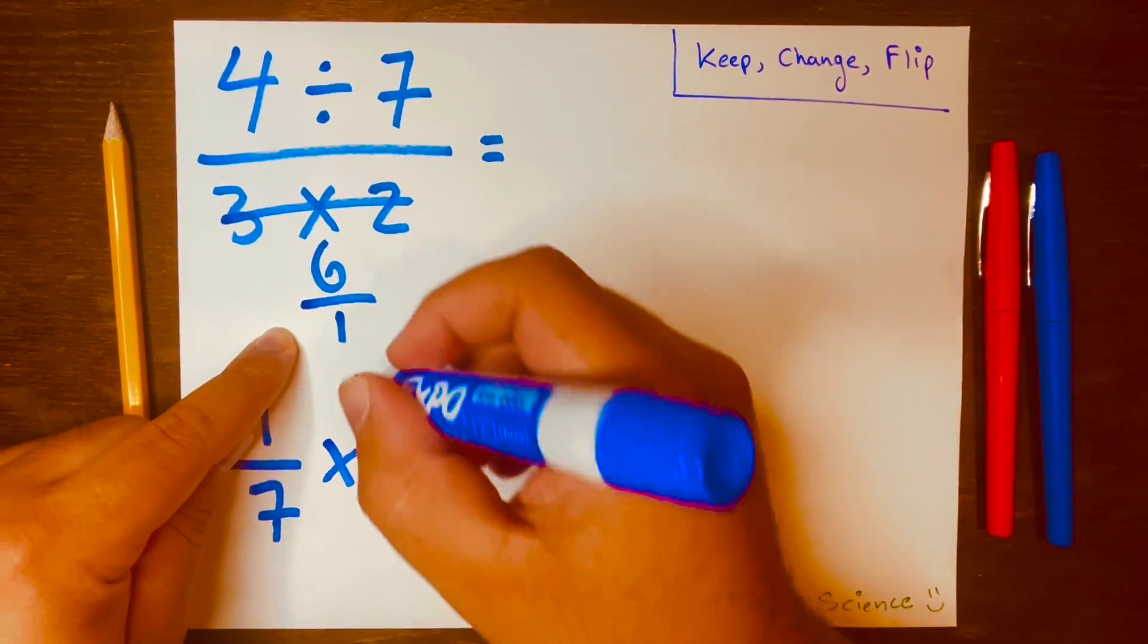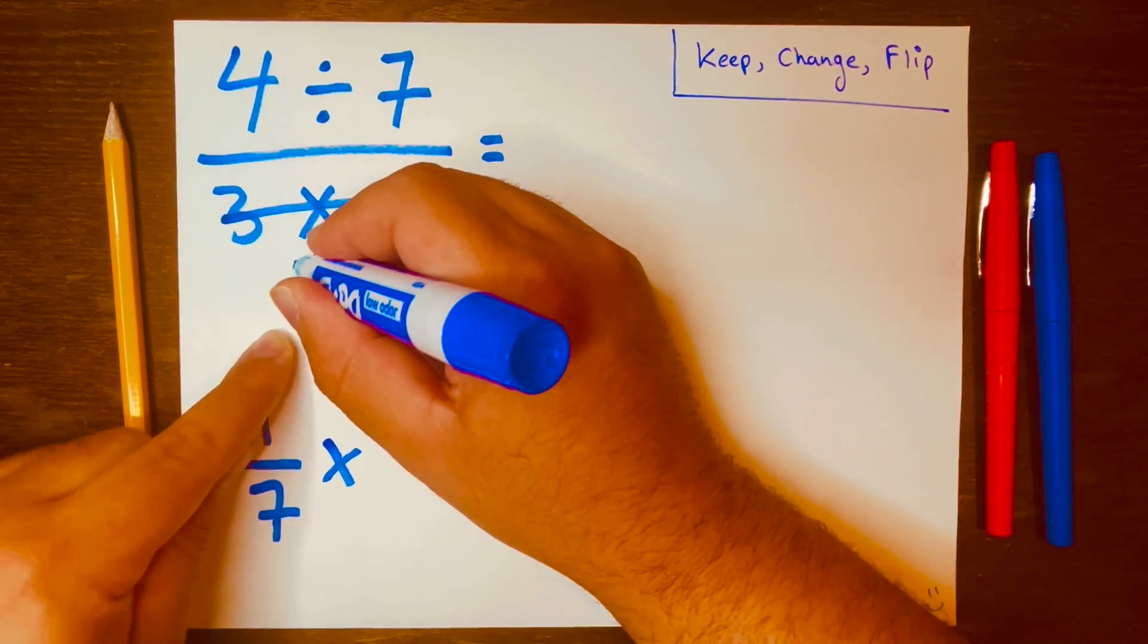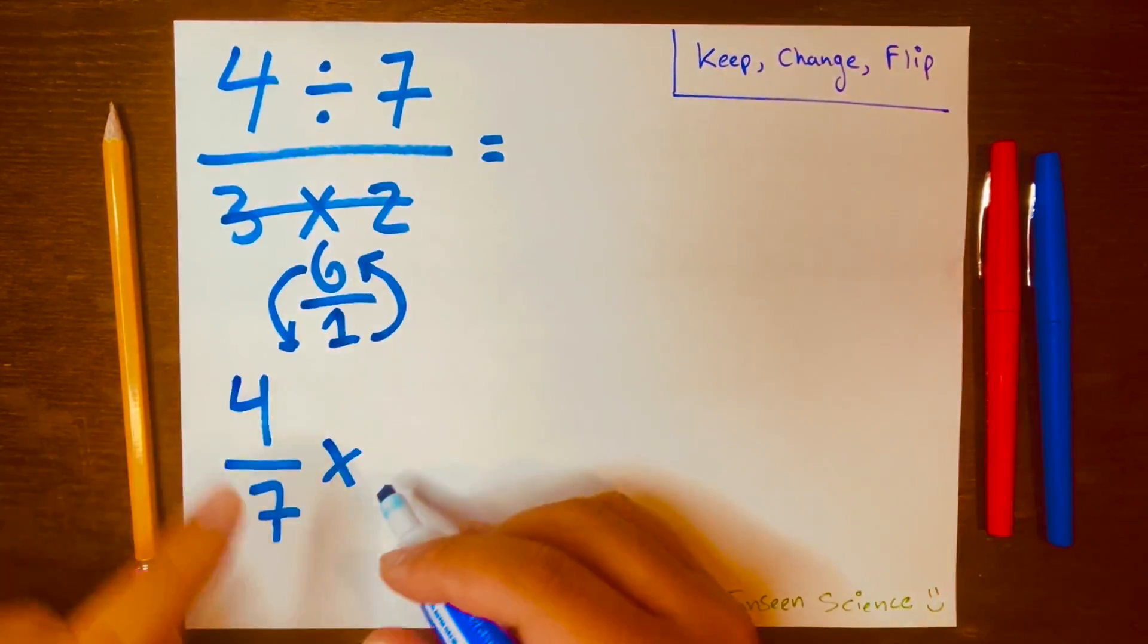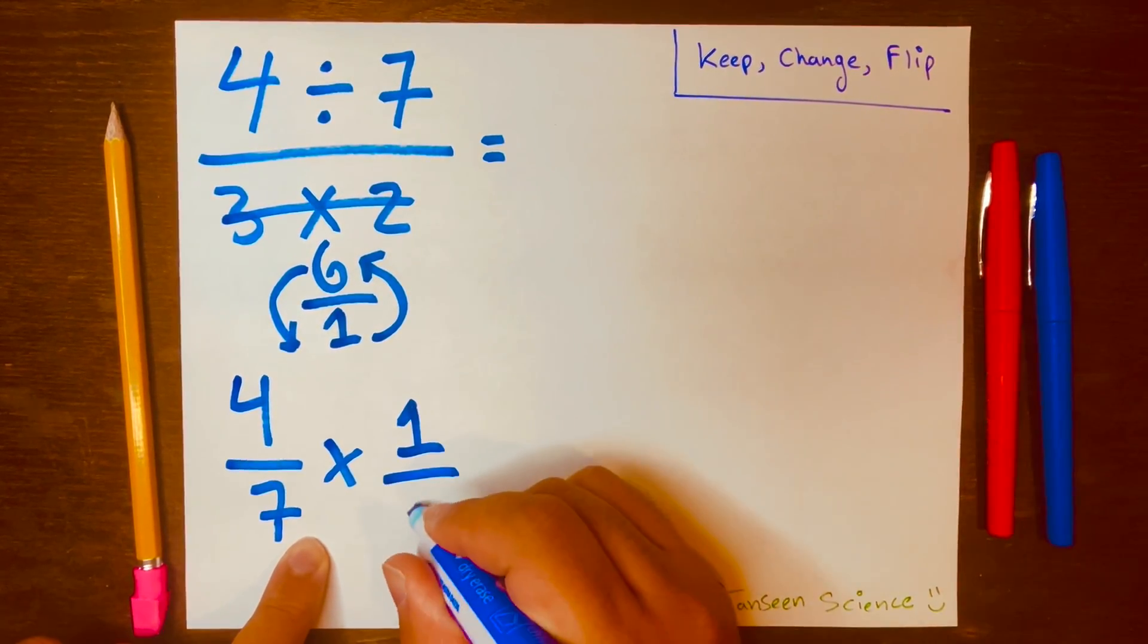Now we've got to flip this fraction. So the 1 will go on top and the 6 will go at the bottom. And it will be written like this: 4 over 7 times 1 over 6.